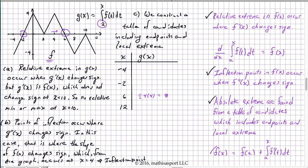Now let's extend to calculate the value at 12. G of 12 equals G of 6 plus the area from 6 to 10 — a triangle with area one-half times base 4 times height negative 4 — which takes us to 10. Then from 10 to 12, one-half times base 2 times height negative 4. So the total is 8 minus 8, giving 0, then minus 4. The final answer for G of 12 is negative 4.